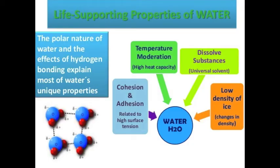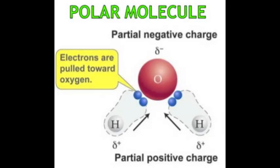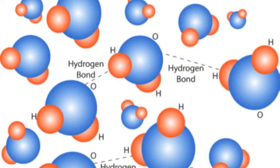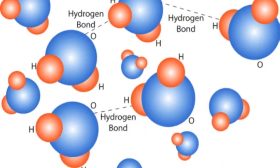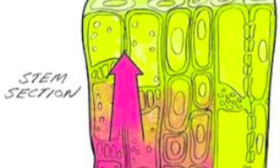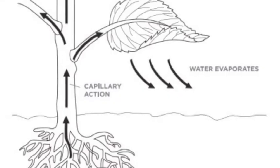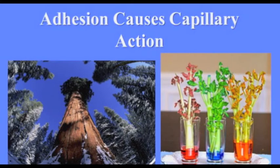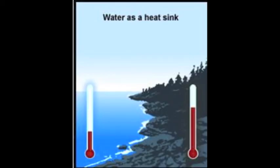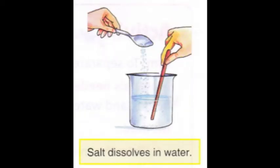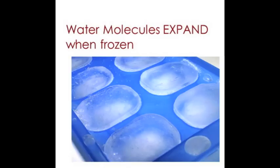Water properties occur because water is polar — it has oppositions, positive and negative. Molecules of H2O stick together and up they go. Against gravity they flow. These are water properties. They absorb a lot of heat. Dissolve solutes easily.